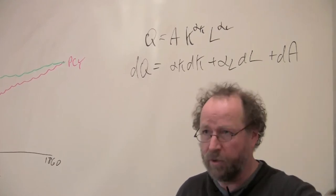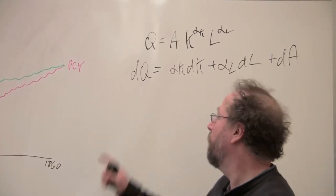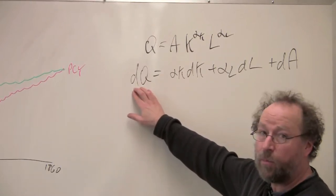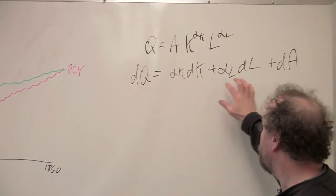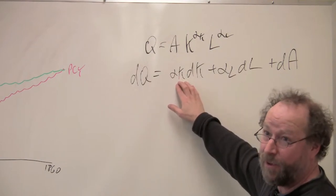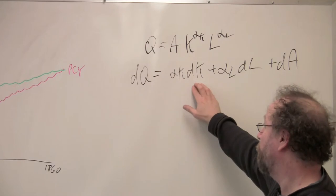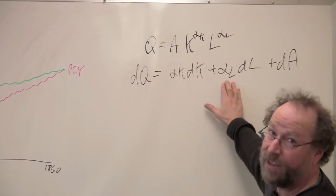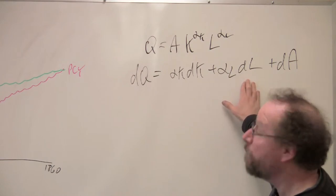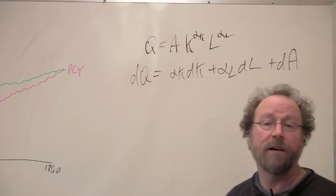More labor, more output. More capital, more output. More efficiency, more output. So, change in output can be decomposed into the elasticity of output with respect to capital times the change in the amount of capital plus the elasticity of output with respect to labor times the change in the quantity of labor plus the change in the efficiency.